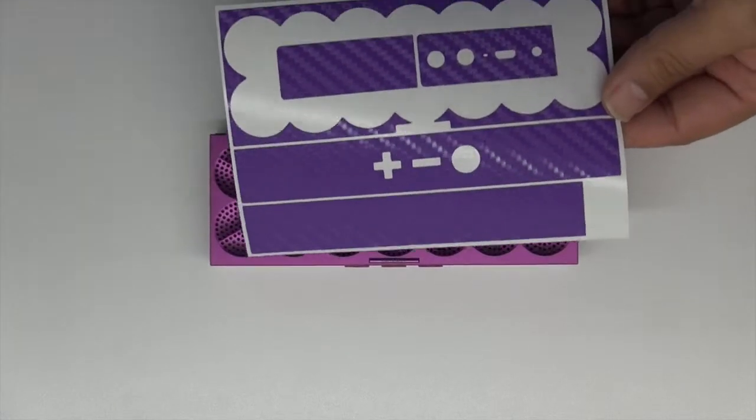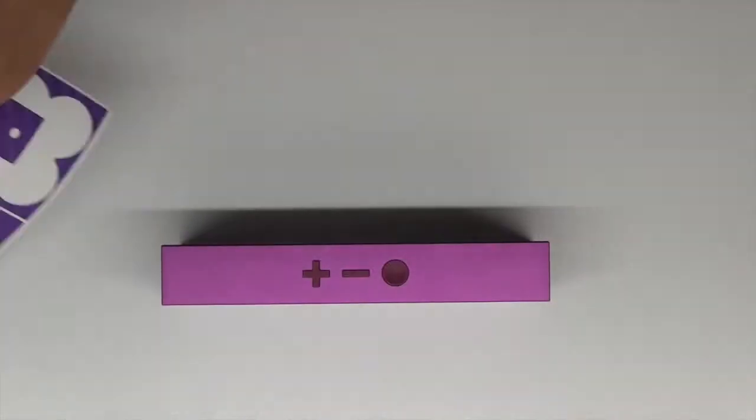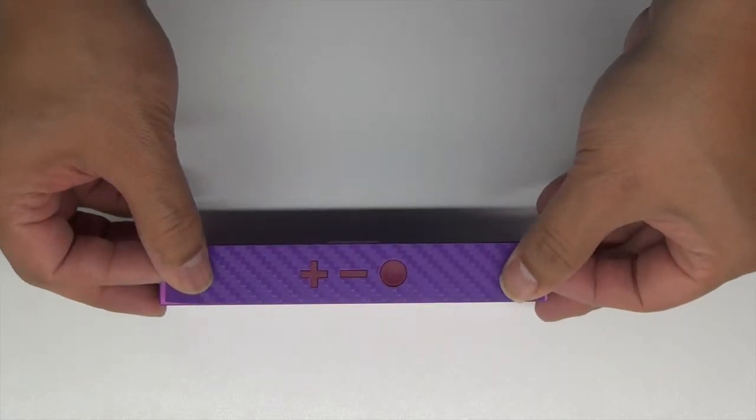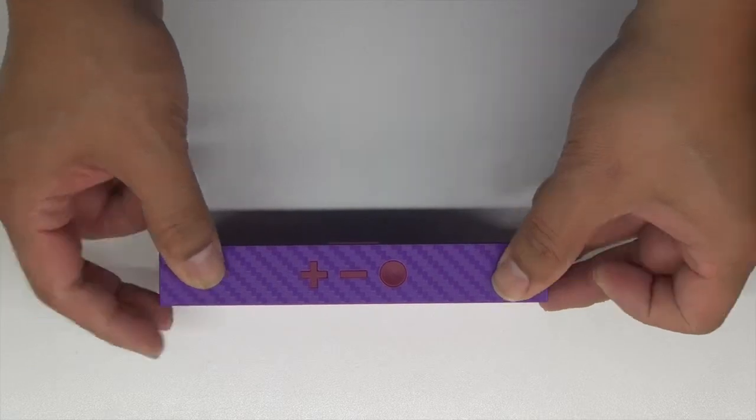Hey guys, today we have the purple snowflake Mini Jambox by Jawbone and we're going to be installing the purple carbon fiber. Our first step is going to be easy pieces, and like always, it's going to be the upper top section by the buttons.